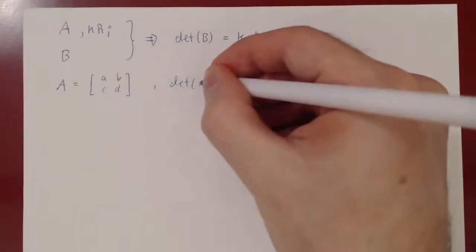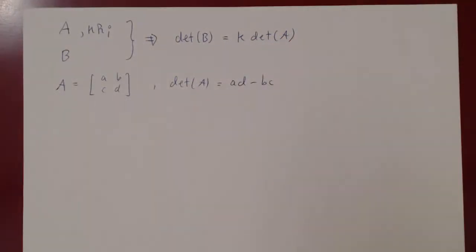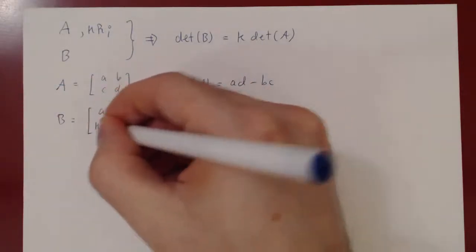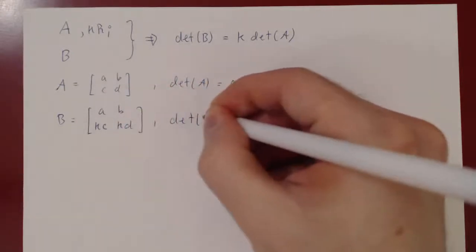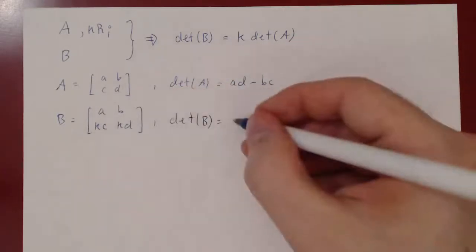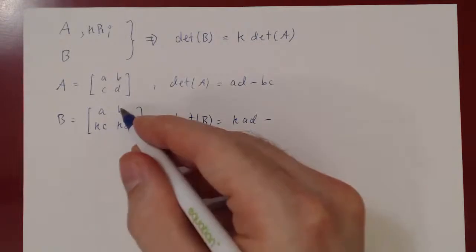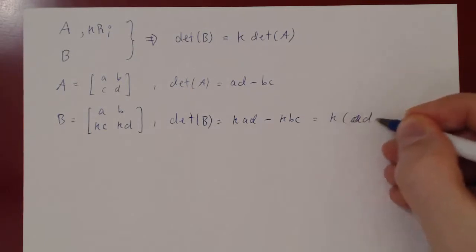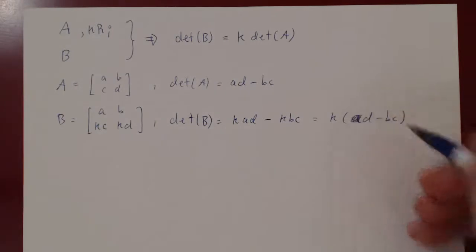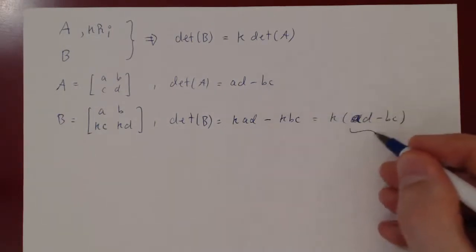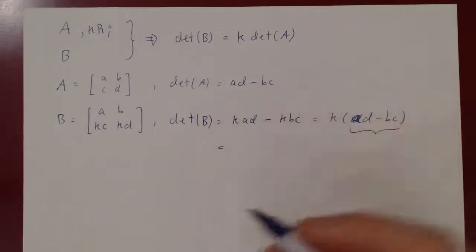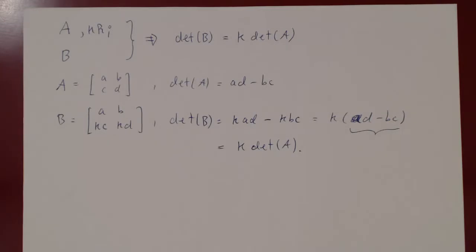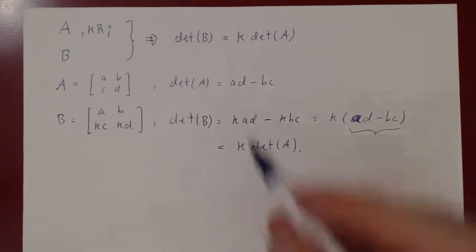We can check this for a 2x2: A = [a, b; c, d], determinant = AD − BC. Multiply row 2 by K to get B = [a, b; Kc, Kd]. The determinant of B = A·(KD) − (KC)·B = K·AD − K·BC = K·(AD − BC), which is K times the determinant of A. That's the second property: multiply a row by K, and the determinant is multiplied by K.